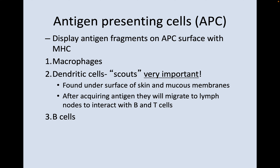Antigen-presenting cells display antigen fragments on their surface with a major histocompatibility complex. These include macrophages and dendritic cells, which are like scouts — very important. You find dendritic cells under the surface of skin and mucous membranes. After acquiring an antigen, these dendritic cells migrate to the lymph nodes to interact with B and T cells.